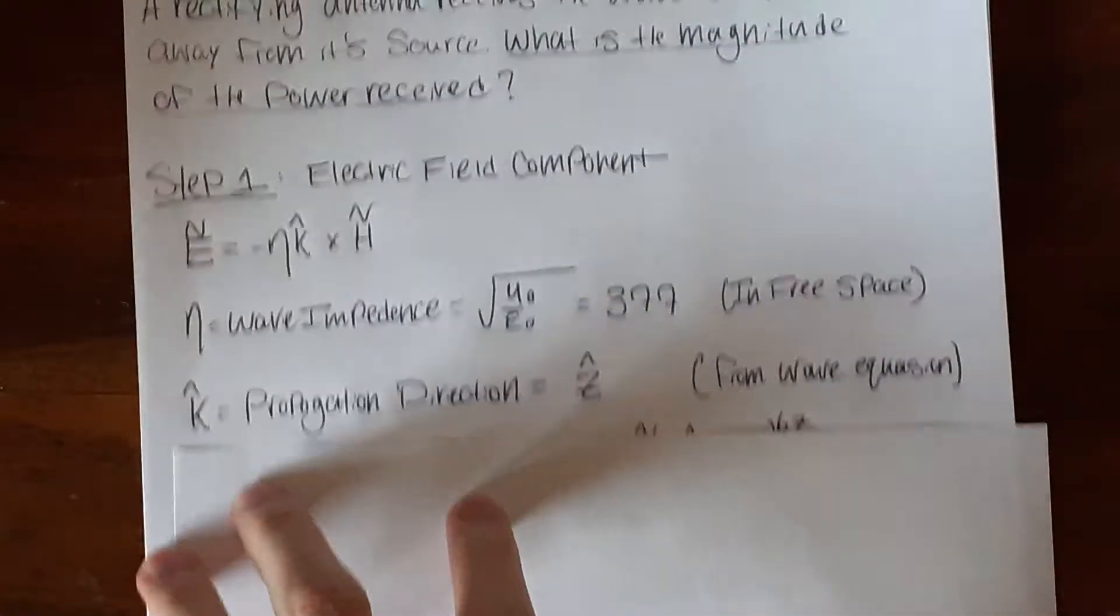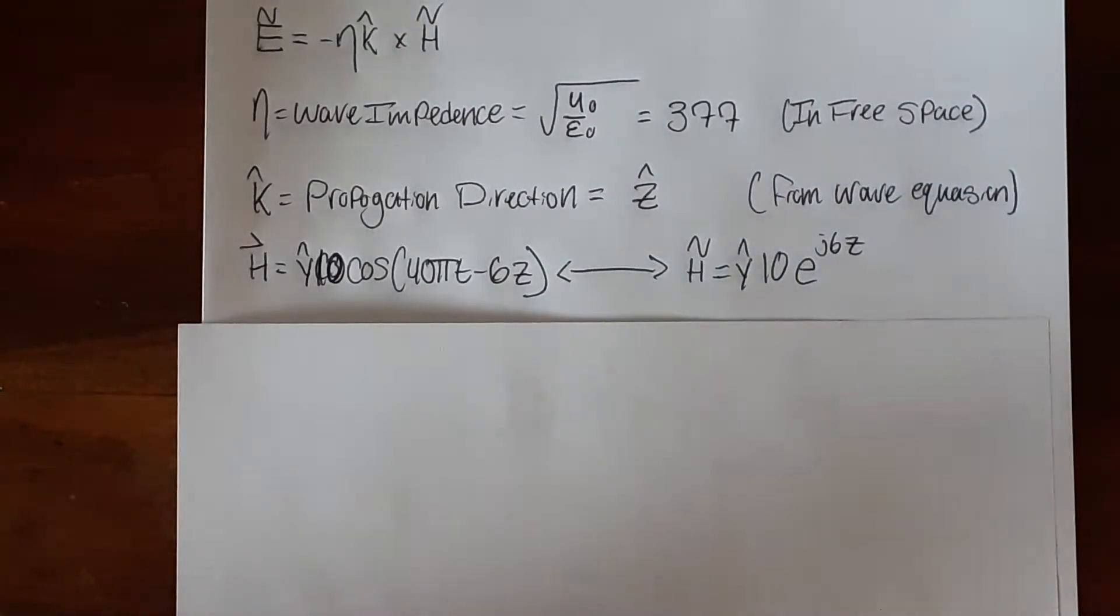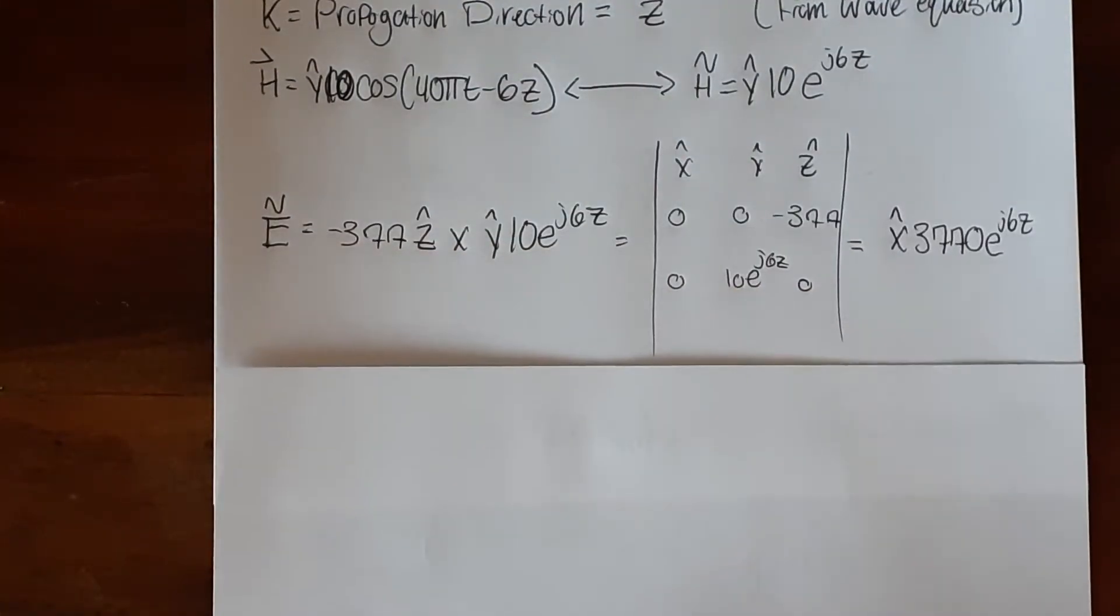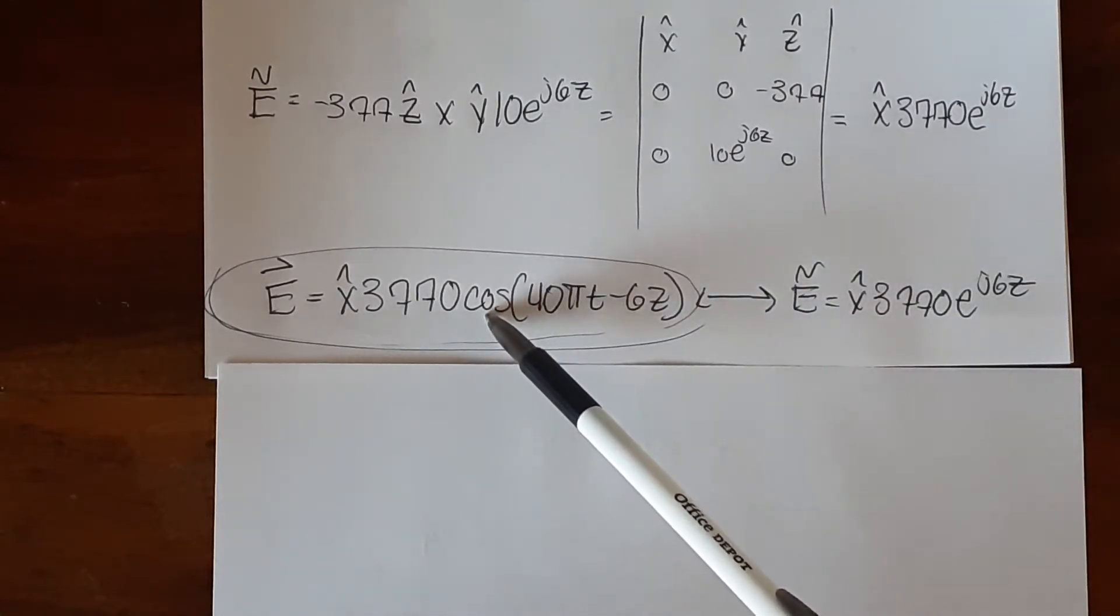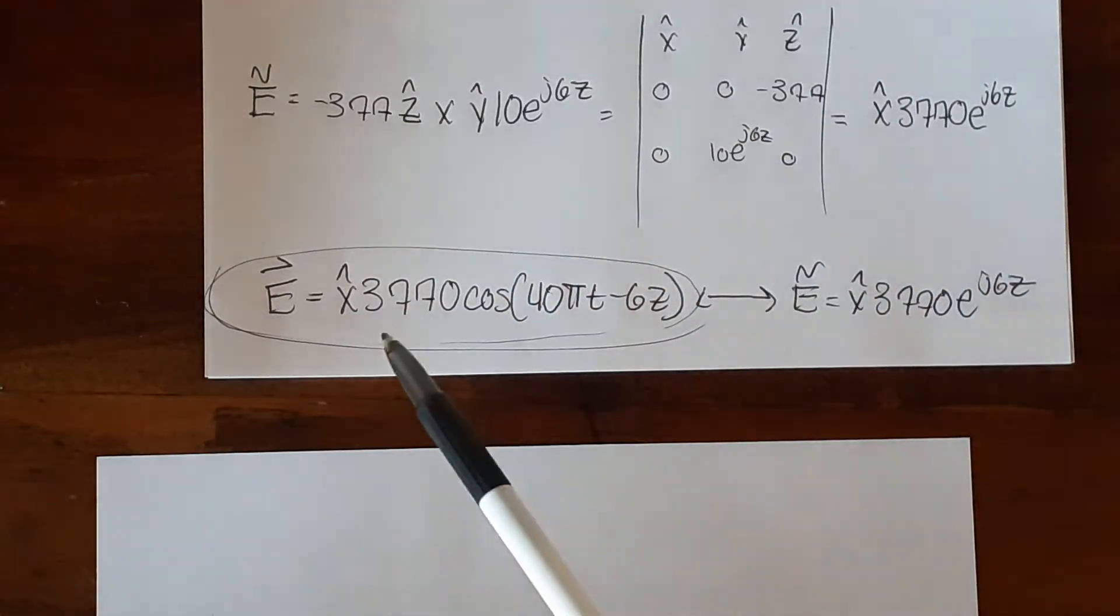The propagation direction is in the z direction which is shown in the equation by the z being here. And we need the phase domain of the magnetic component. We were given the time domain but you just need to do a transformation here. You change this cosine into e and you drop the you suppress the time notation. So using this we need to take the cross product of those two values we just found and once we get that we get the phase domain of the electric field which is this right here. However we need to put it back in the time domain so we do just that. Just do the reverse to what we did earlier with the magnetic field and we get the time domain of the electric field component, which is in the x direction which is perpendicular to both the propagation direction and perpendicular to the magnetic component which is what we know is correct.